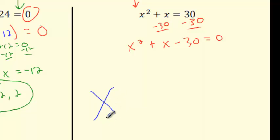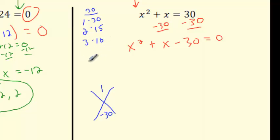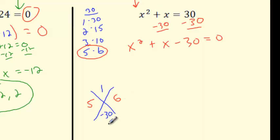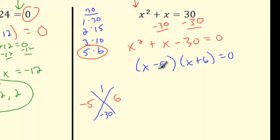What multiplies to negative 30 and adds or subtracts to 1? 1×30, 2×15, 3×10, 5×6. It's got to be 5 and 6 — that's the only combination. With signs, we need negative 5 plus 6 to be positive 1. So it's x minus 5 times x plus 6. Does the order matter? No — you're multiplying, order is not important. As long as you have the right factors, you're good.